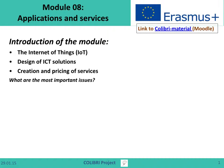Module 8 consists of three different elements. First, the Internet of Things, which is actually a lot about the new gadgets that are communicating all around us. We have the design process, mainly of the ICT solution, but it's a bit broader. And we have the creation and pricing of services.